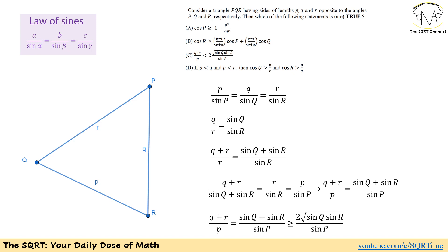Now applying AM-GM to sin Q and sin R: sin Q + sin R ≥ 2√(sin Q · sin R). Therefore (q+r)/p = (sin Q + sin R)/sin P ≥ 2√(sin Q · sin R) / sin P, which means (q+r)/p is greater than or equal to 2·sin Q·sin R / sin P — the opposite of what Case C requires. So Case C states the inequality in the wrong direction and is therefore incorrect.